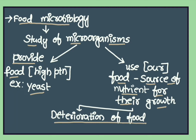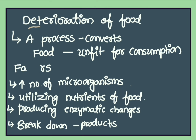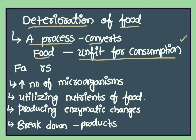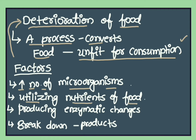What is deterioration of food? Deterioration of food is a process which converts our food as unsuitable for consumption. Factors that cause deterioration of food are increasing in number of microorganisms in food, because they utilize the nutrients of food, they produce genetic changes in food, and they break down products of food. These causes deterioration of food.